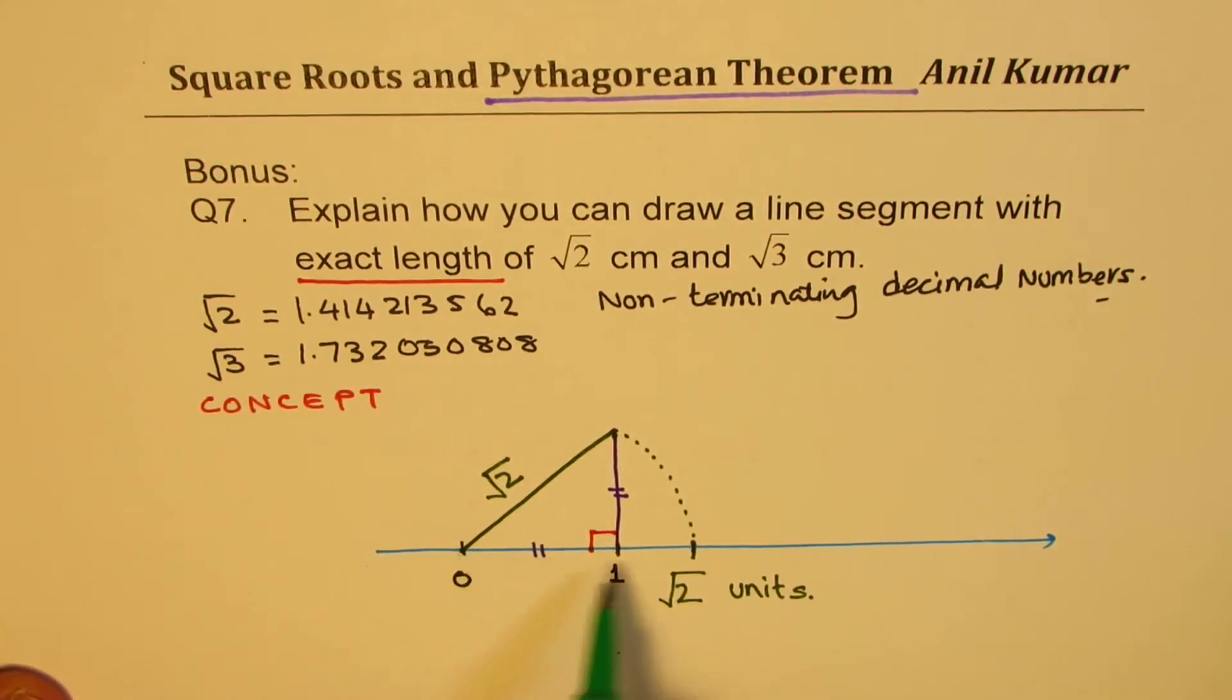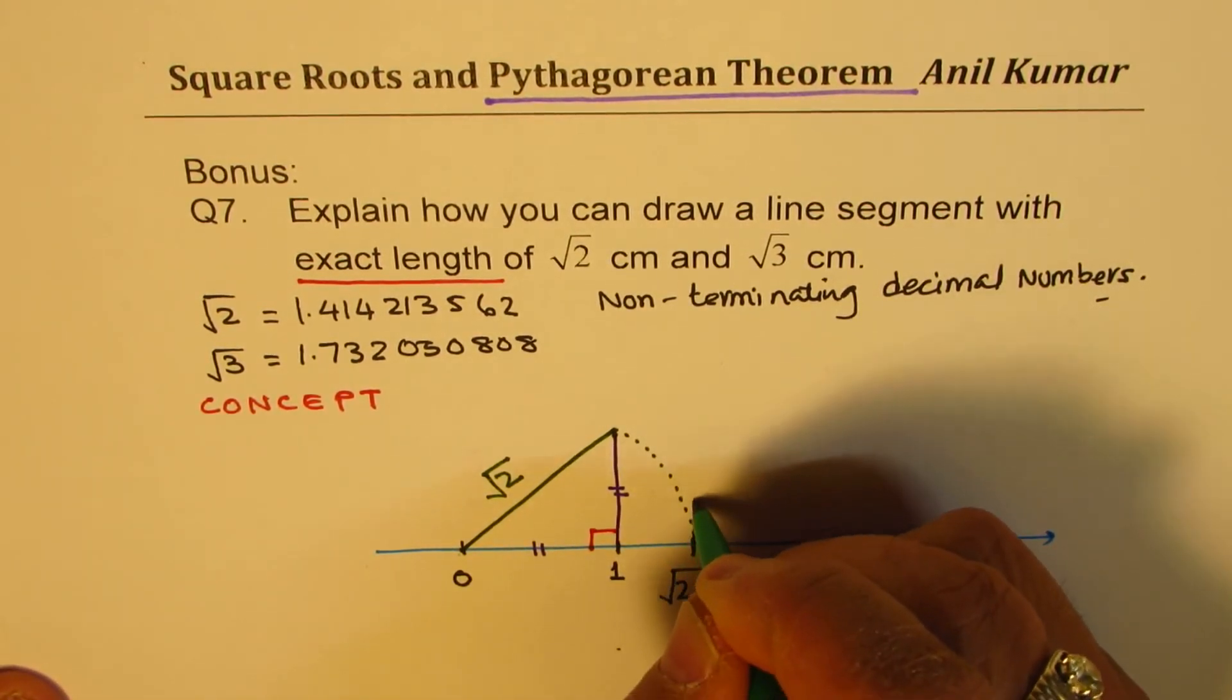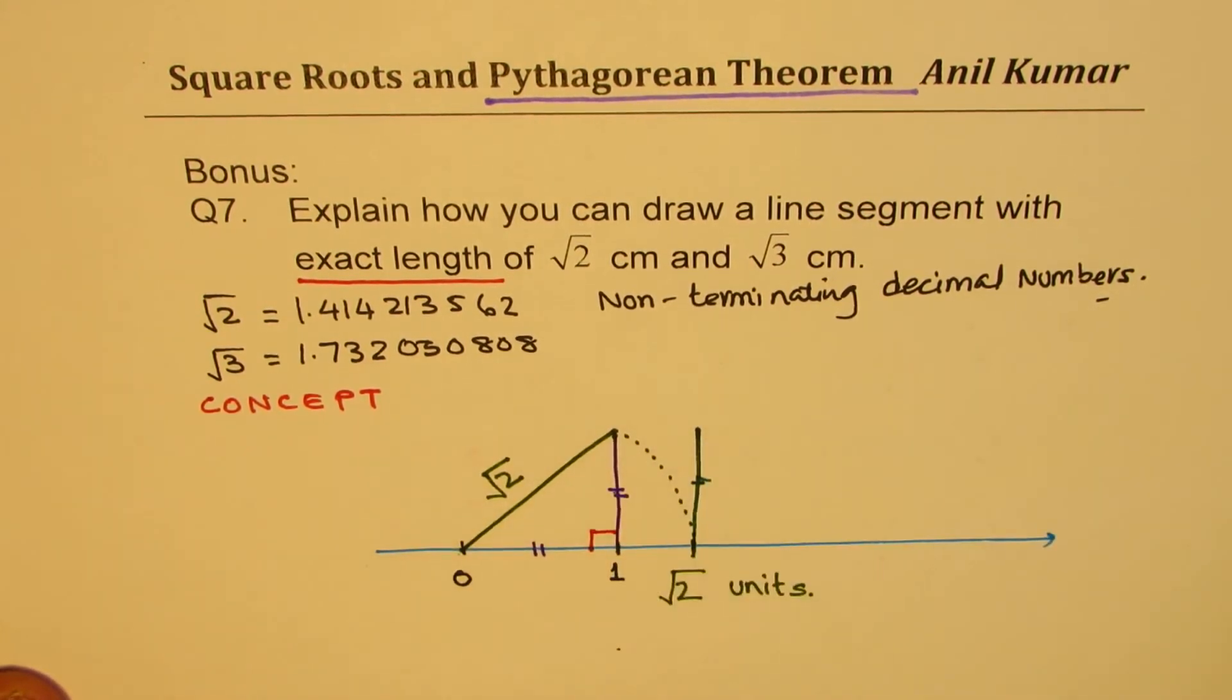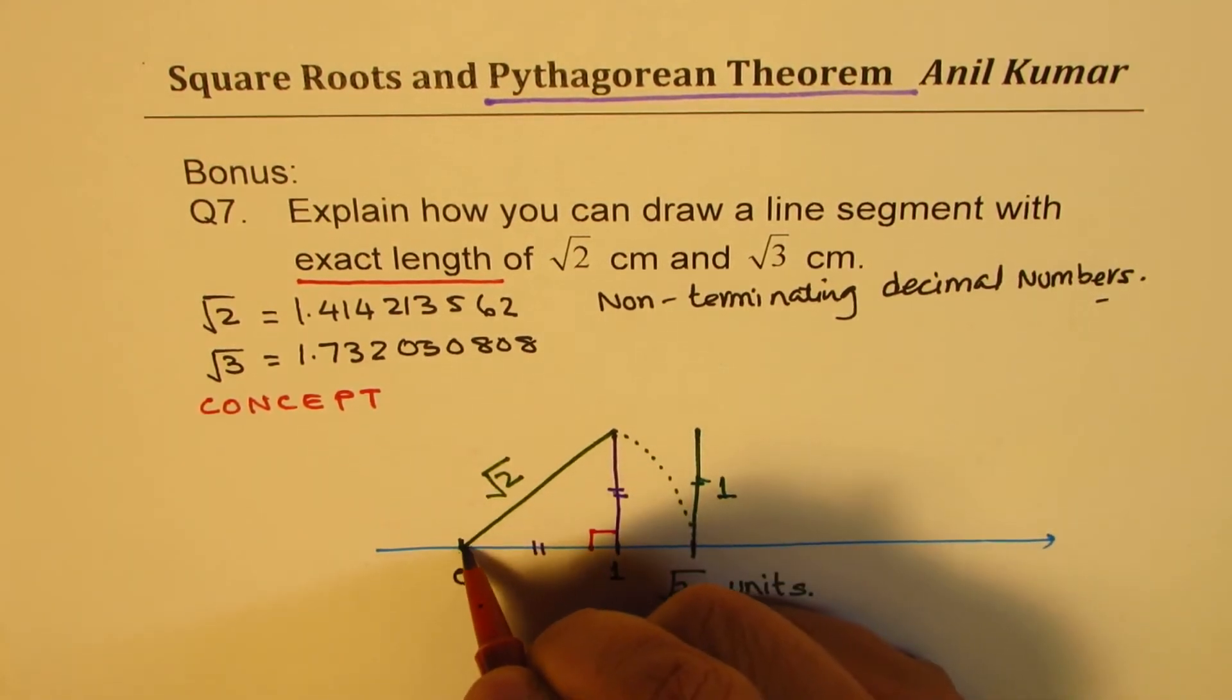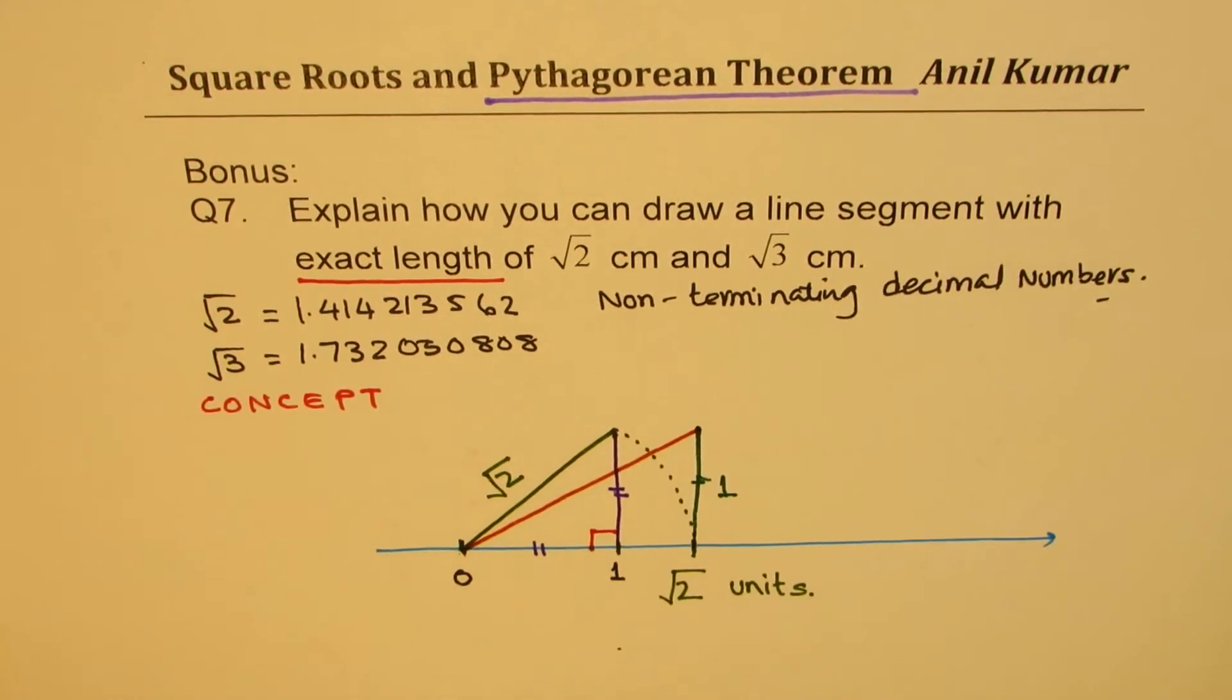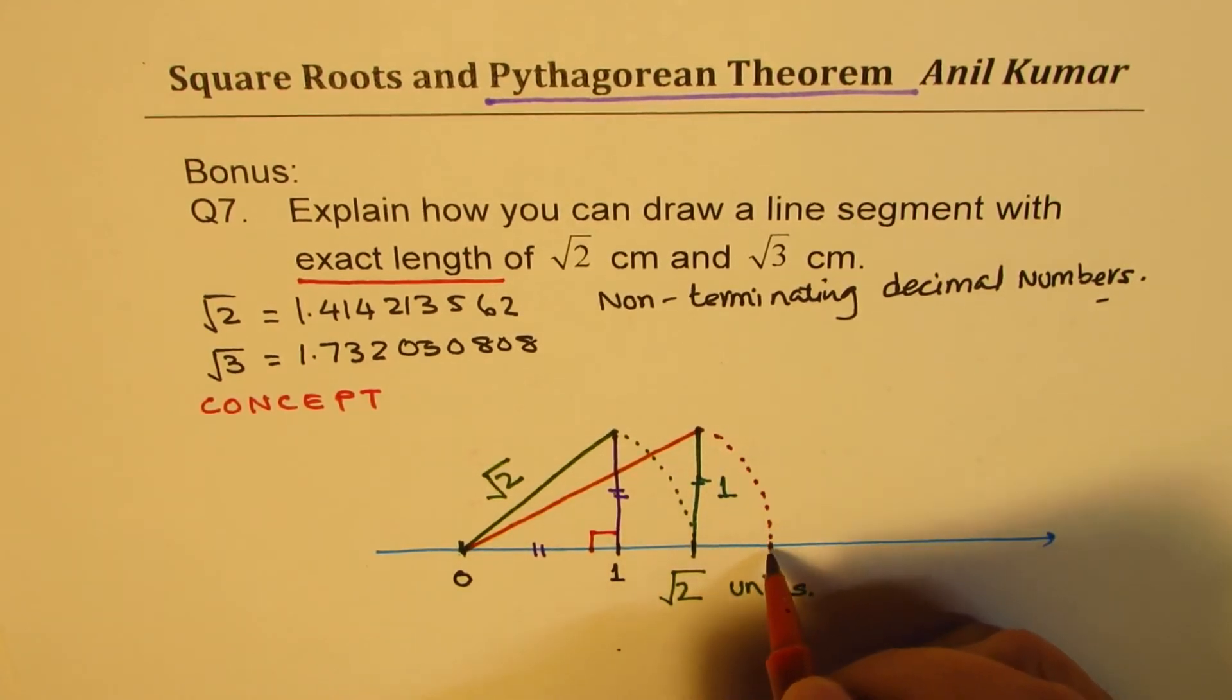Now we have a length which is exactly square root 2. I can actually, again, draw a line which is equal to 1 unit. So if I have this as 1 unit, this from here to here is square root 2. Now, what is the diagonal for this rectangle whose one side is square root 2? So if I draw this diagonal, then this should be equal to how much? This should be equal to square root 3.